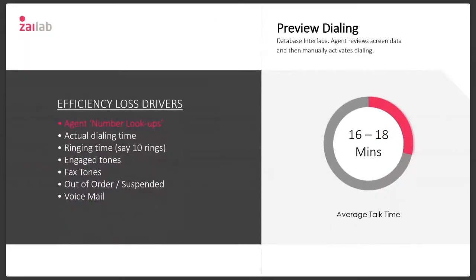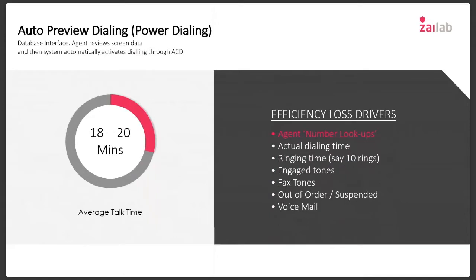With preview dialing — an entry-level technology where the customer record is on screen but the agent decides when to dial — we eliminate agent lookup time, achieving around 16 to 18 minutes per hour. Auto preview dialing lets the campaign manager decide how long the agent previews the customer data before the system automatically dials, giving a little more pace control and pushing to around 18 to 20 minutes per hour.